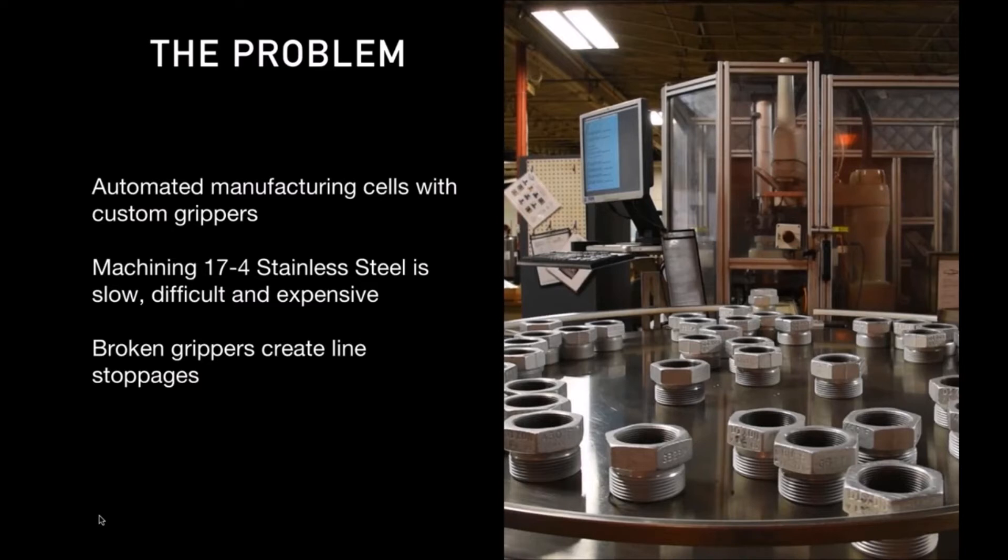The last step of the final assembly process is to put in a polymer crush ring, which they press into the part before shipping it to customers. Unfortunately, when they machine these things, the insides of the couplings are incredibly sharp. You can see that the threads are very sharp. The way they press in that crush ring, they use an automated cell with a robot arm with a gripper on it.